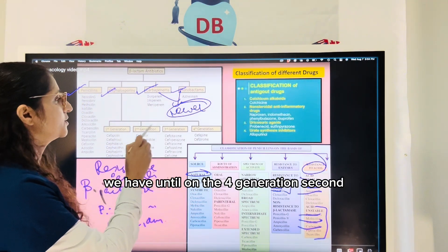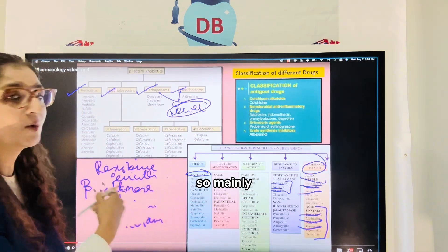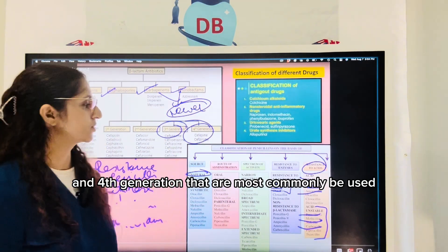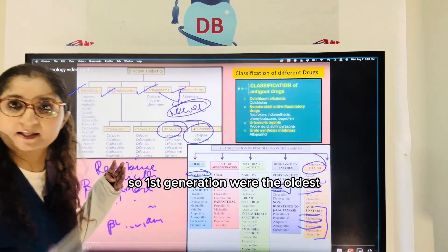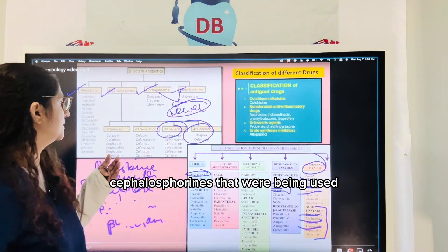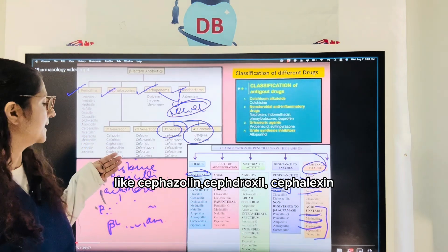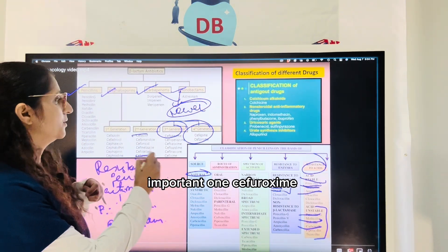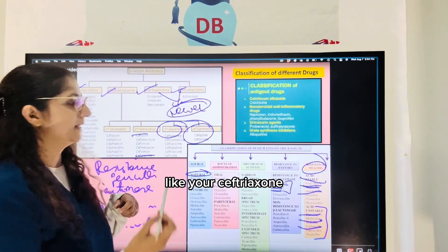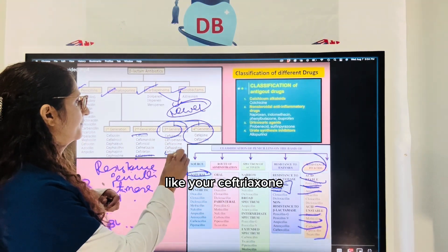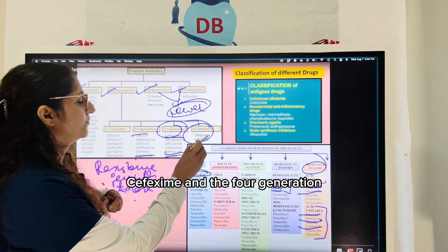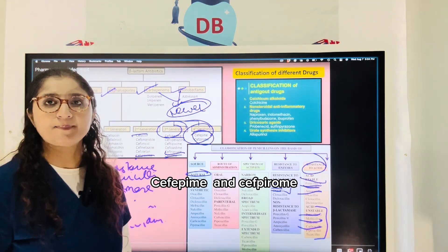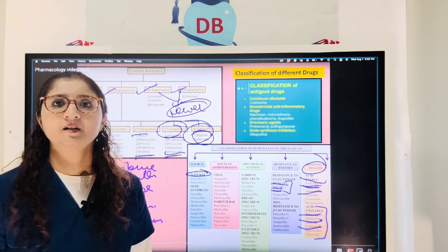Cephalosporins are divided into four generations. The third and fourth generations are most commonly used today. First generation examples include cefazolin, cefadroxil, and cephalexin. Second generation includes cefaclor and cefuroxime. Third generation includes ceftriaxone, cefotaxime, and cefixime. The fourth generation — the latest — includes cefepime and cefpirome.